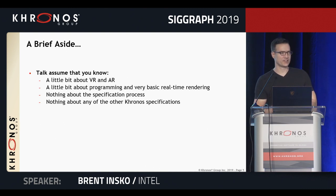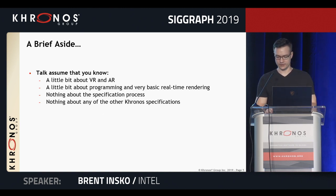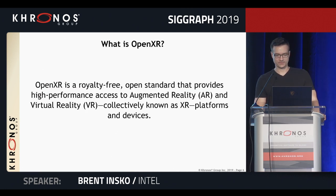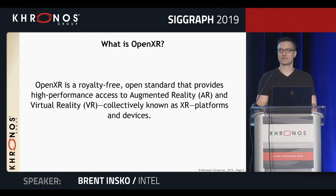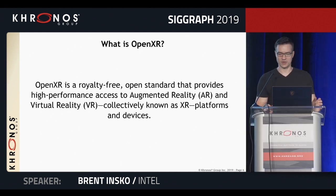Just a brief aside: the talk assumes you know a little bit about AR and VR and basic real-time rendering, but nothing about the specification process or other Khronos specifications. So what is OpenXR? OpenXR is a royalty-free open standard that provides high-performance access to augmented reality and virtual reality platforms and devices. I'll be using the term XR throughout the talk — this includes all the technologies around AR, VR, MR, and anything similar.